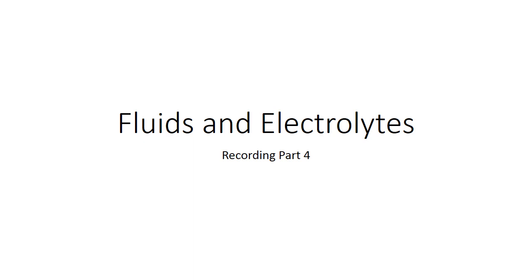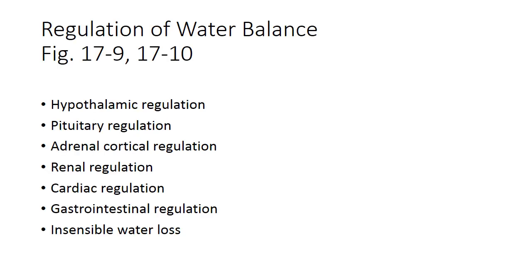Welcome back to our overview of the regulation of body water and electrolytes. We are on the last recording for today, at about page 306-307 in your textbook and slide 17 in your outline. The body has many mechanisms in place to regulate water and its flow throughout the body, including maintenance of blood pressure and maintenance of urine output.